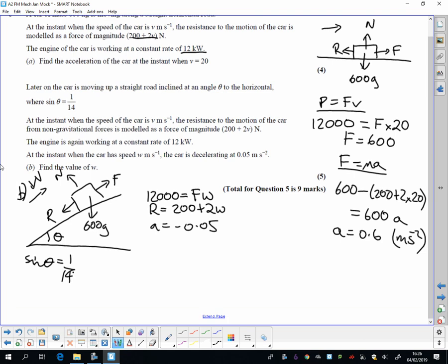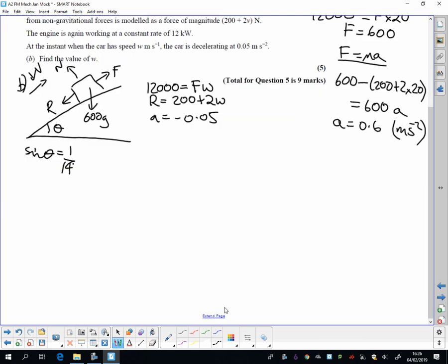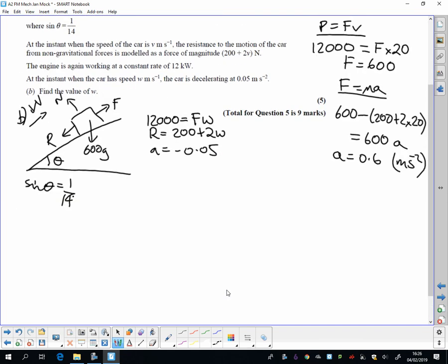Right, so from here, I can now use force is mass times acceleration again. So what's my resultant force? I'm going to use this parallel to the slope. So going up the slope,